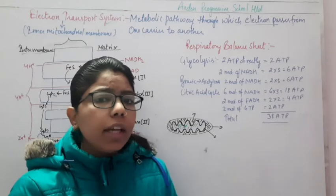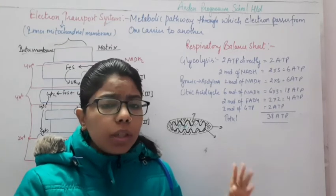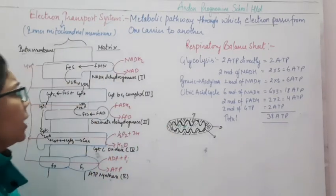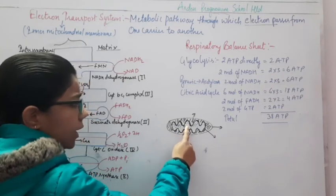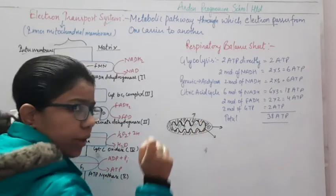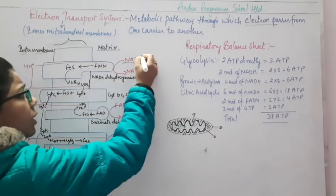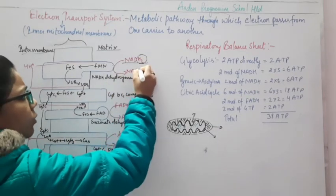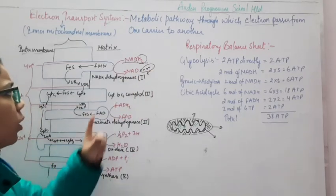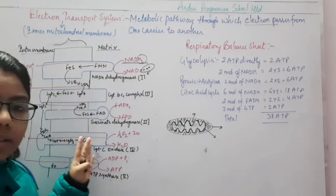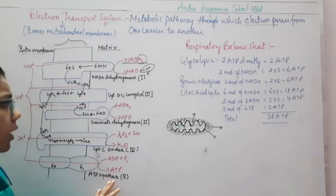From glycolysis and the Krebs cycle, we get NADH₂ and FADH₂. ATP can be utilized directly, but NADH₂ and FADH₂ cannot — they must undergo the electron transport system. The NADH₂ and FADH₂ come into the matrix, then move towards the inner mitochondrial membrane. In the ETS, there are five complexes. They are used in this order: Complex I, then Complex III, then Complex II, then Complex IV, then Complex V.